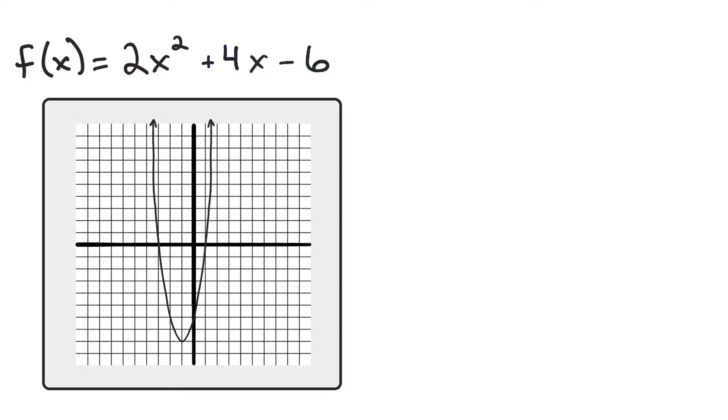I'm going to do two examples. The first one here, I already have the graph for us, so I can reference the information as I find it. First thing we're going to find is called the axis of symmetry, which I often abbreviate as AOS.